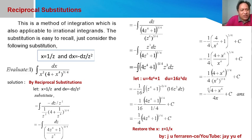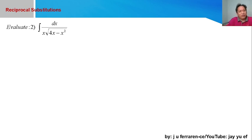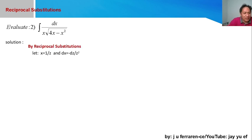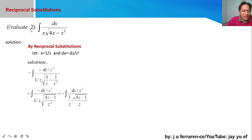For our additional example, we also have a problem involving an irrational integrand. Recalling the reciprocal substitution: x is replaced with 1/z, and dx is changed to −dz/z². Substituting into the given, the numerator becomes −dz/z². The x in the denominator is changed to 1/z, and the square root of 4x becomes the square root of 4/z.